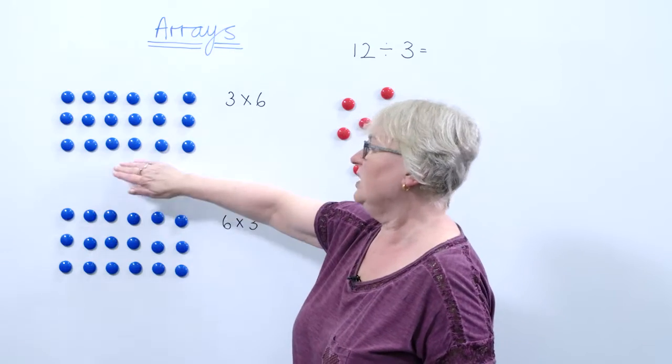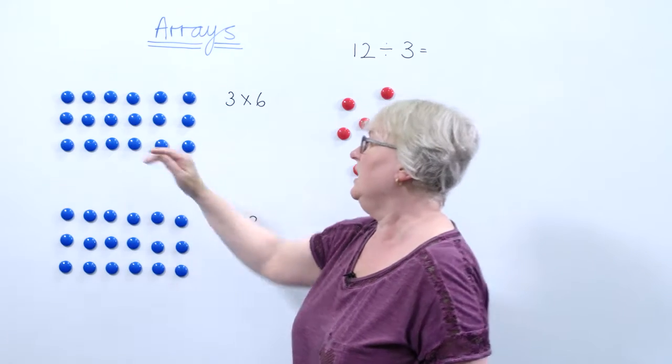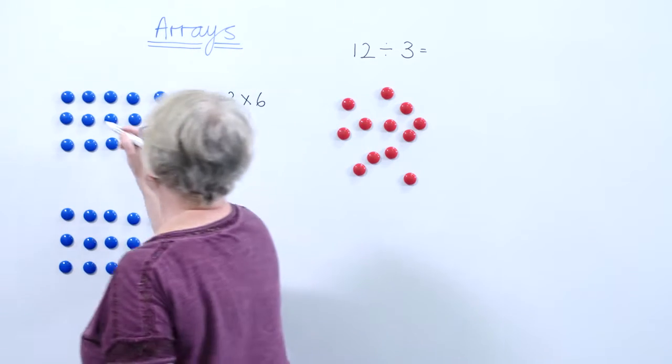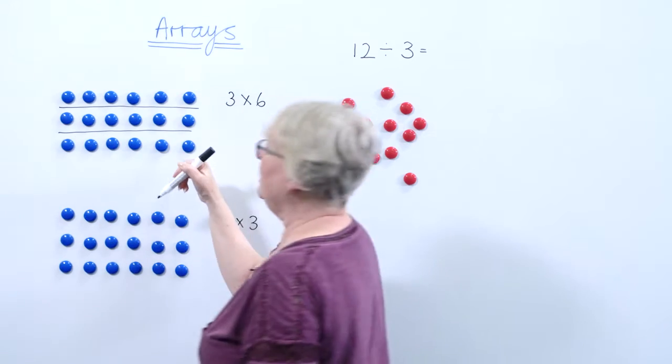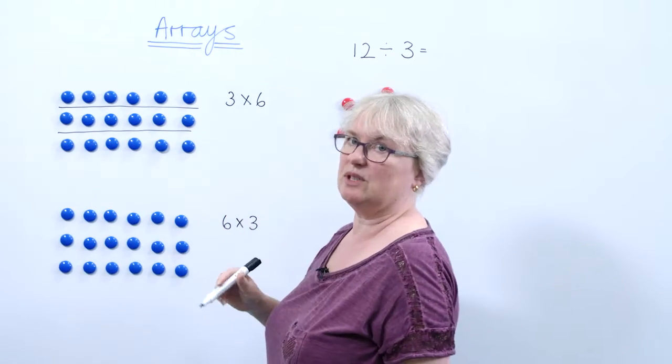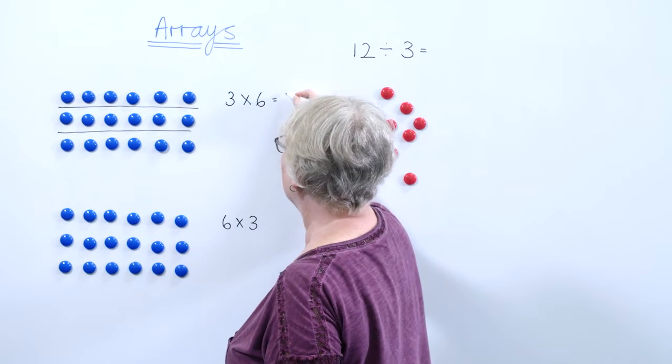Here we are. Let's look at the first one. It's showing me I've got one, two, three rows of six counters. Three sixes are 18.